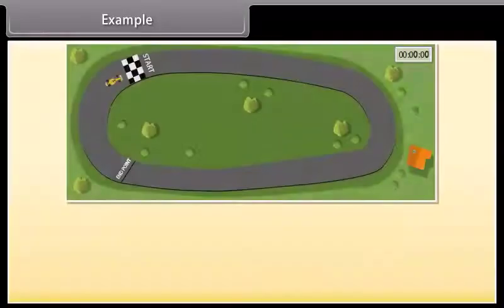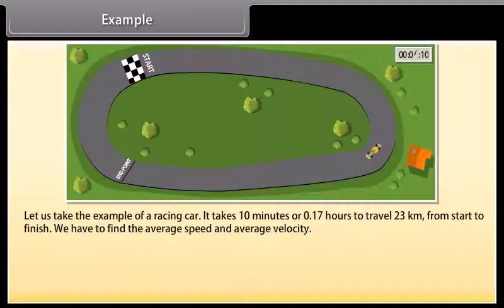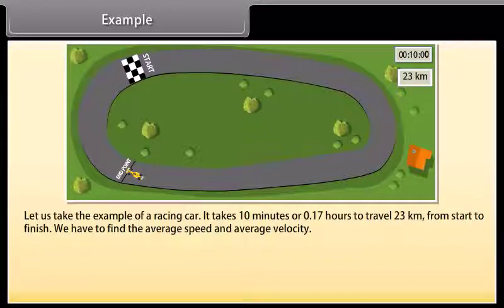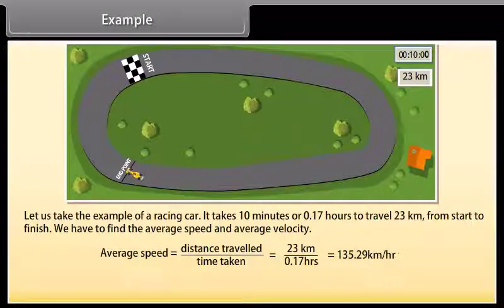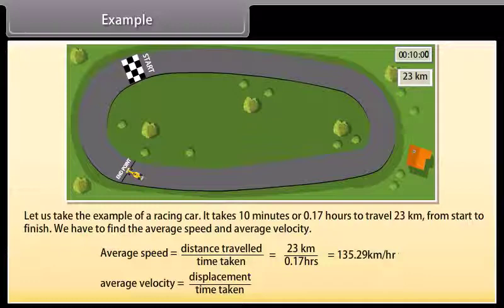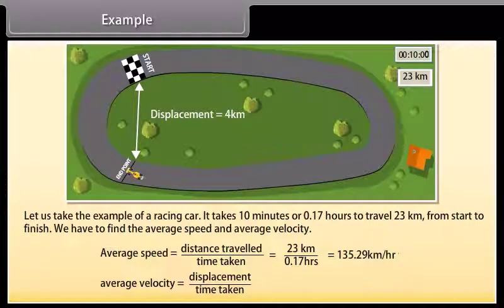Example: A racing car takes 10 minutes (or 0.17 hours) to travel 23 kilometers from start to finish. We have to find the average speed and average velocity. Average speed = distance traveled / time taken = 23 km / 0.17 h = 135.29 km/h. Average velocity = displacement / time taken. The displacement is 4 kilometers, so average velocity = 4 km / 0.17 h = 23.53 km/h.